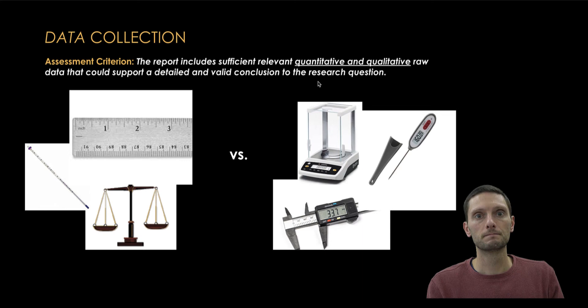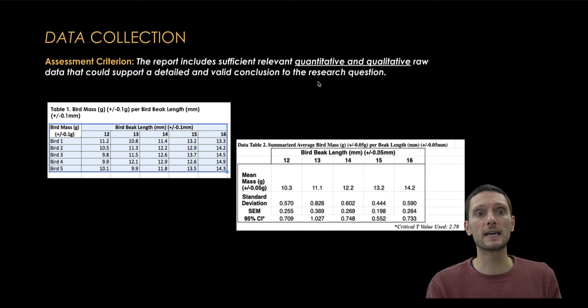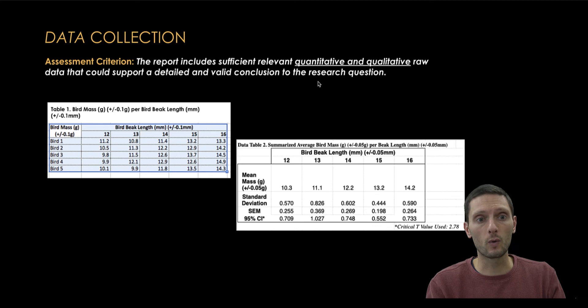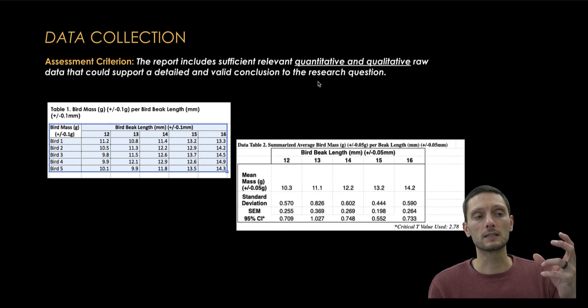In addition to actually collecting data, we need to put that data into tables. The first example is a raw data table. As we collect our data, we need to organize it in a way that can be displayed. A raw data table includes those actual raw measurements. You can see that it has a title and number, and I also have units and uncertainties for the variables both in the title and within the table itself — that is really crucial.